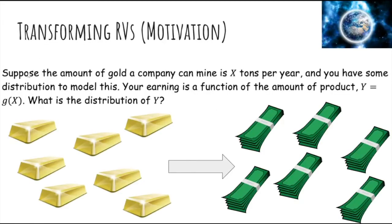As an example, suppose the amount of gold that a company can mine is X tons per year, and you have some distribution to model this. However, your earning is not just X — it's actually a function of this amount of product, which is Y, or g(X). What is the distribution of Y? We know the distribution of X, but how does that help us model the distribution of Y?